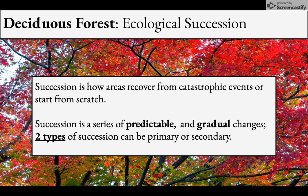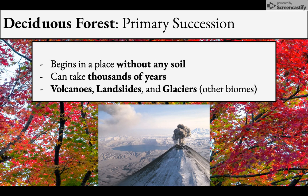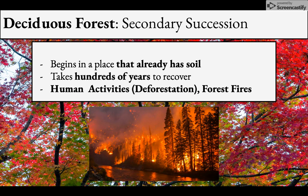It can take hundreds or even thousands of years if starting from scratch. There are two types: primary succession, where you start from scratch — the first time anything will grow there, such as on a volcano covered in cooled lava or igneous rock, which can also occur after landslides or glaciers. Secondary succession is where something was already growing there, got wiped out, and now gets a second chance — it takes hundreds of years since there's already soil present.